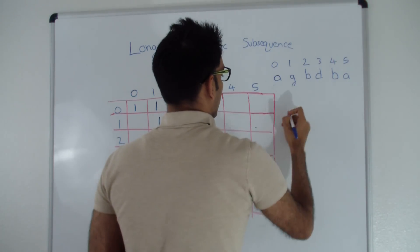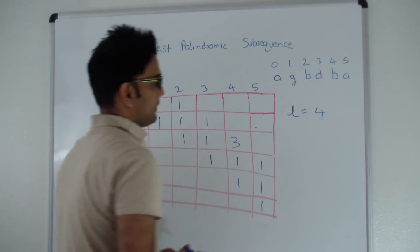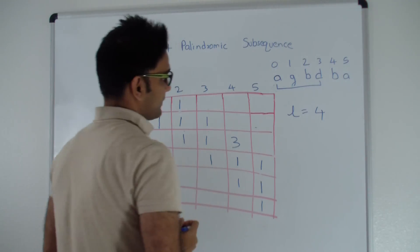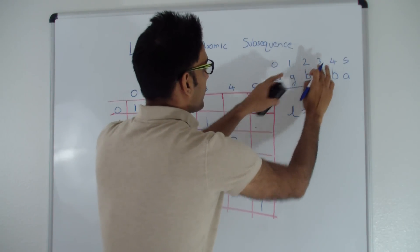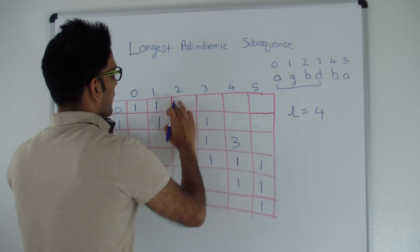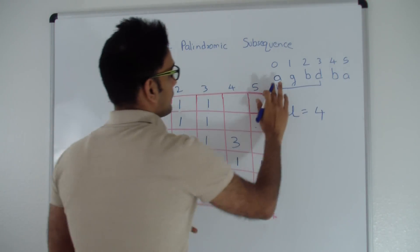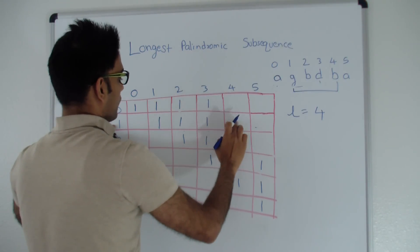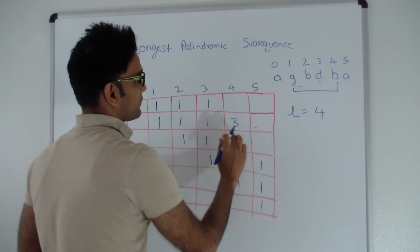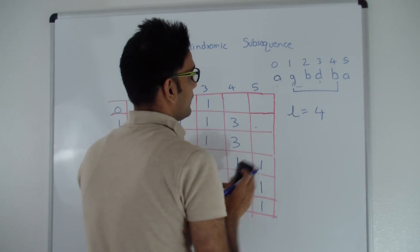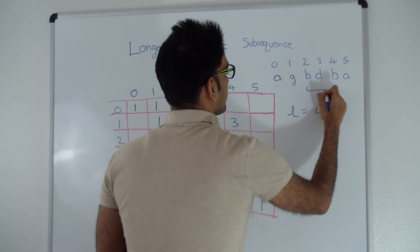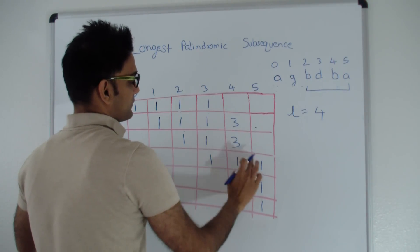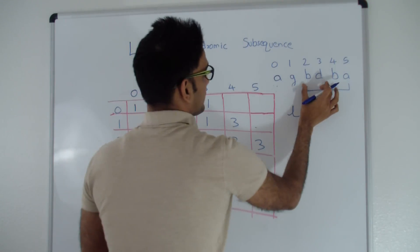Now L equals 4. For positions 0 to 3 — A and D are not same — so cell 0,3 is max of cell 0,2 or cell 1,3, which is 1. For positions 1 to 4 — G and B are not same — so cell 1,4 is max of cell 1,3 or cell 2,4, which is max of 1 or 3, so 3. For positions 2 to 5 — B and A are not same — so cell 2,5 is max of cell 2,4 or cell 3,5, which is 3.